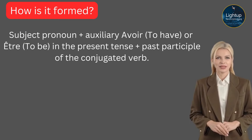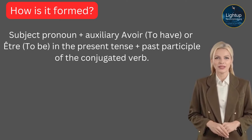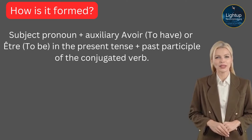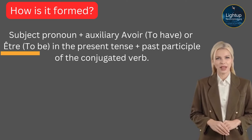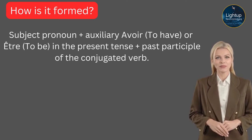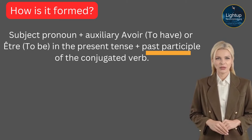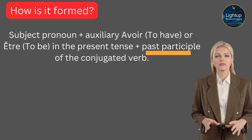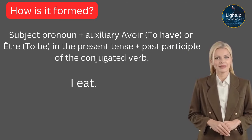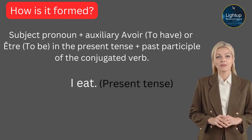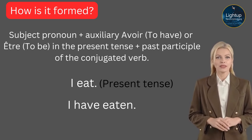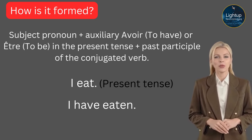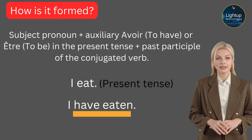Then I am going to need an auxiliary verb. Have a look at these two auxiliary verbs: we need either to have — avoir — or to be — être. We need to conjugate these two according to the subject pronoun, and this is in the present tense. Then we need a past participle. For example, 'I eat' is the present tense, but 'I have eaten' uses an auxiliary verb to put it into past tense — we have transformed this verb into the past tense.